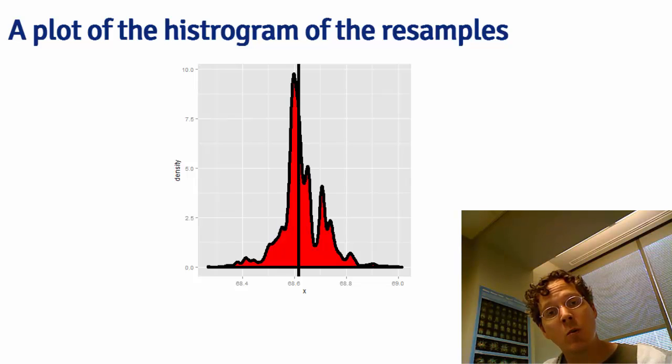Then for each one of these new data sets, we calculated the median. We did that 10,000 times, and we got a collection of medians. What this density estimate is, is an estimate of the distribution of medians where we don't know the actual population distribution. We're estimating it from our observed data.